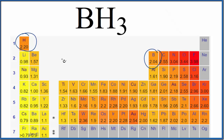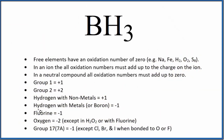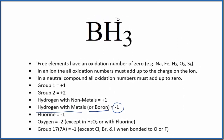When we're assigning oxidation numbers, we assign the electrons to the more electronegative element. So the hydrogen will get the electrons — that's going to make it negative. Looking at our rules, hydrogen will have a negative one charge when it's bonded to boron. So each hydrogen will be negative one.